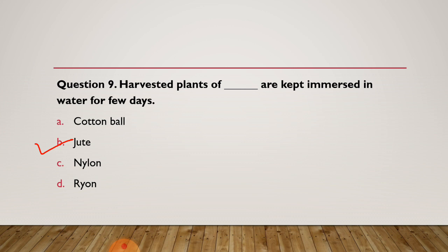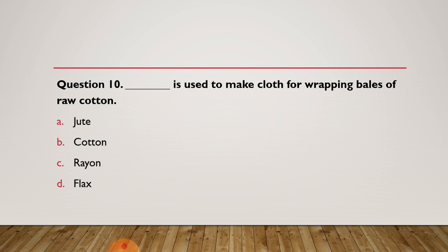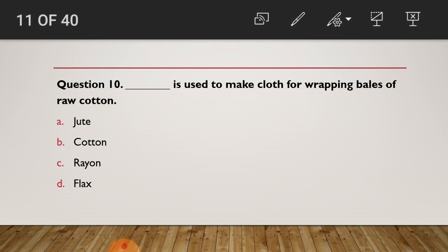Question 10: Dash is used to make clothes for wrapping bales of raw cotton. Options: jute, rayon, or flax. This question is from your exercise — from the uses of dash. Have you chosen your answer? The answer of question 10 is jute, which we have read in the uses of jute. Jute is used to make clothes for wrapping bales of raw cotton. This question is also in your exercise.